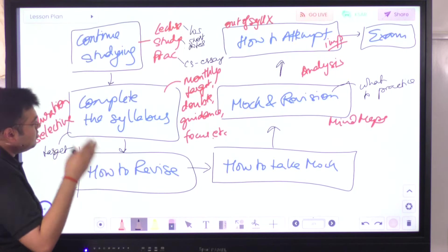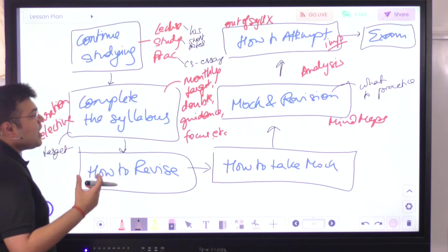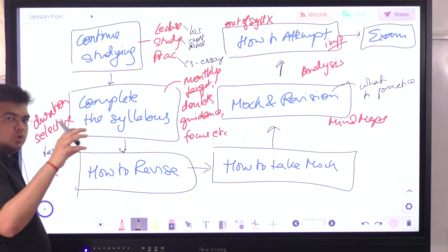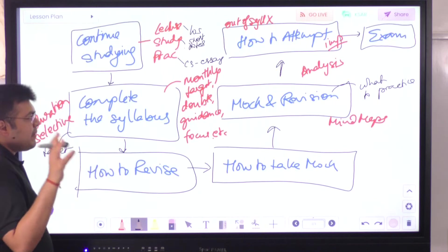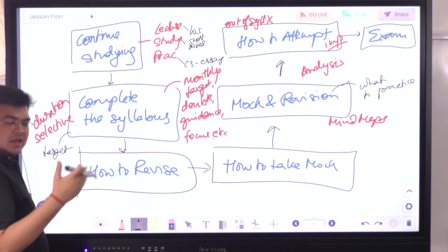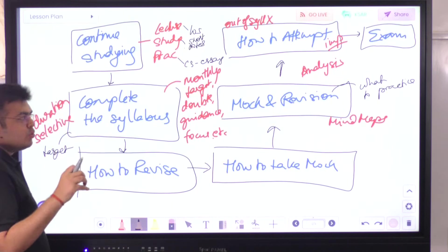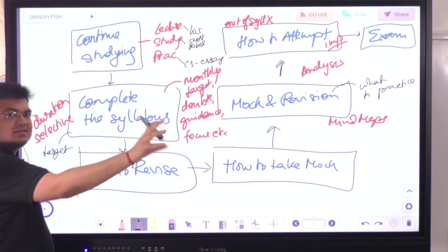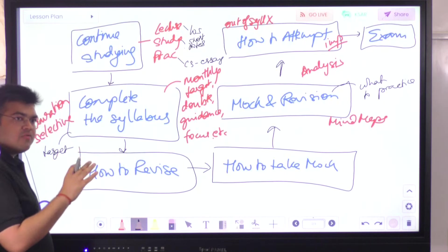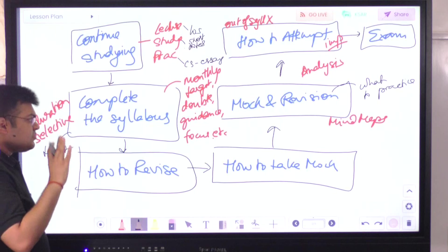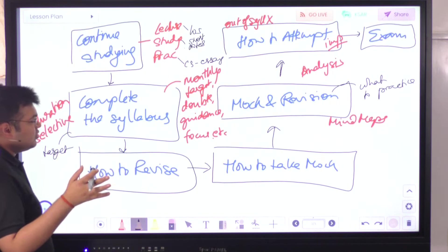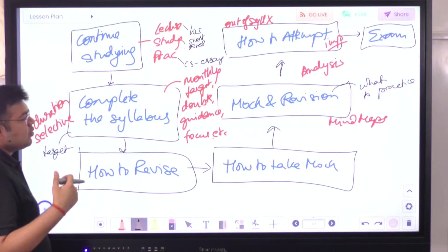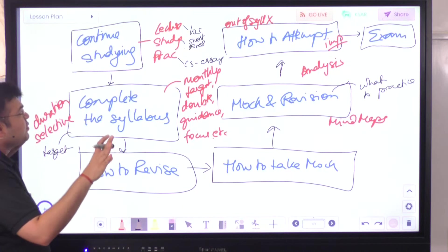After completing the syllabus, monthly targets are provided. For example, there are different WhatsApp groups for FRM Part 1 — Group A, B, C, D — and you'll be part of one group. Every month I take an update on how many chapters each student has completed and give a monthly target based on that. I also provide an average of how other students are faring. Doubt sessions are available, difficult questions are in the app, and guidance on focus and retention is provided throughout the curriculum.